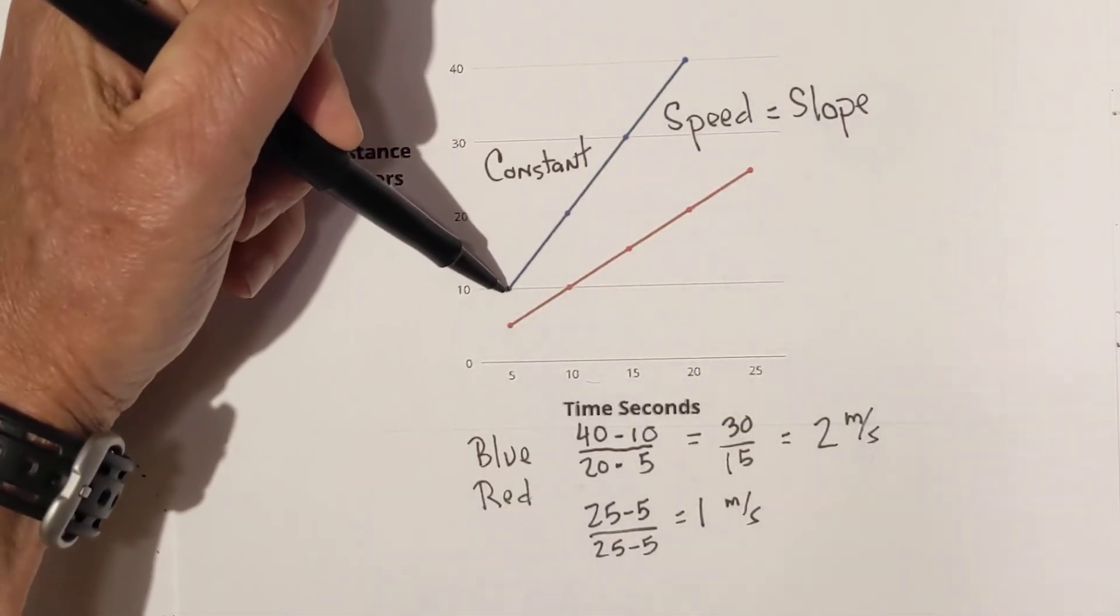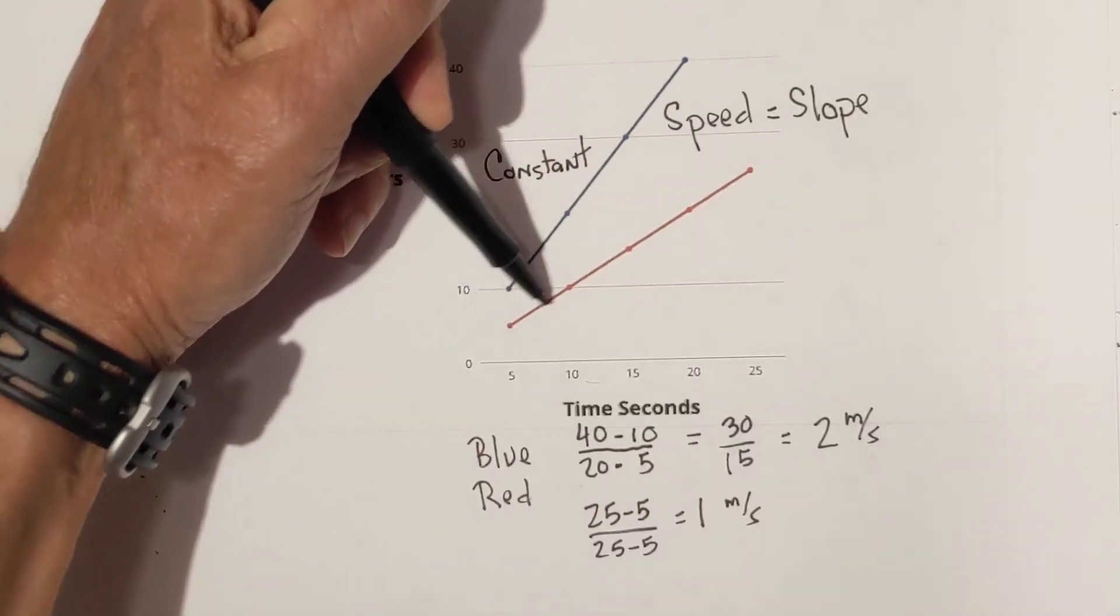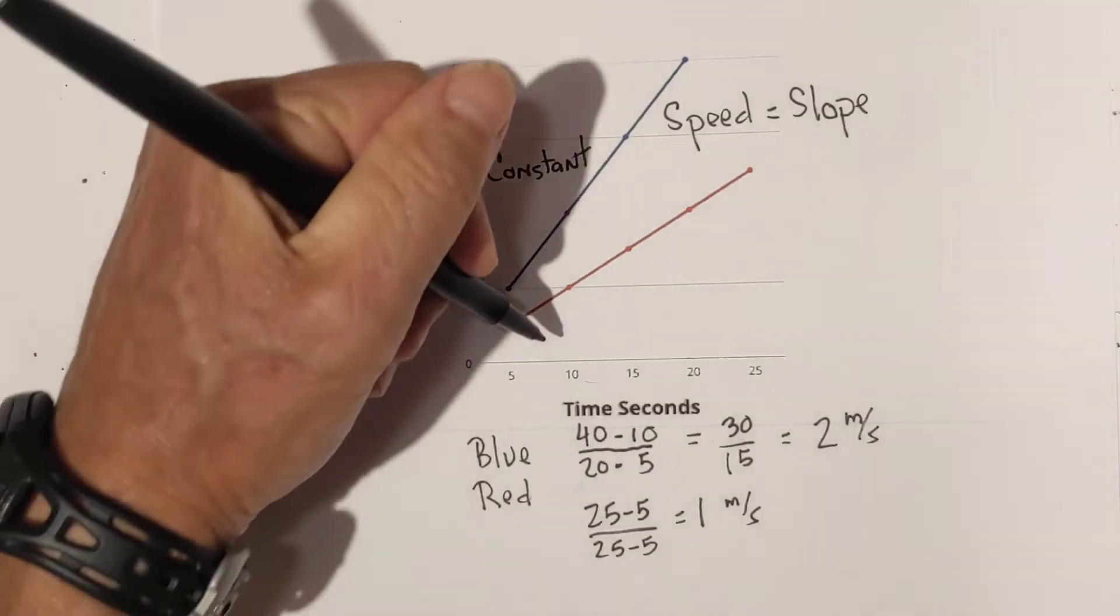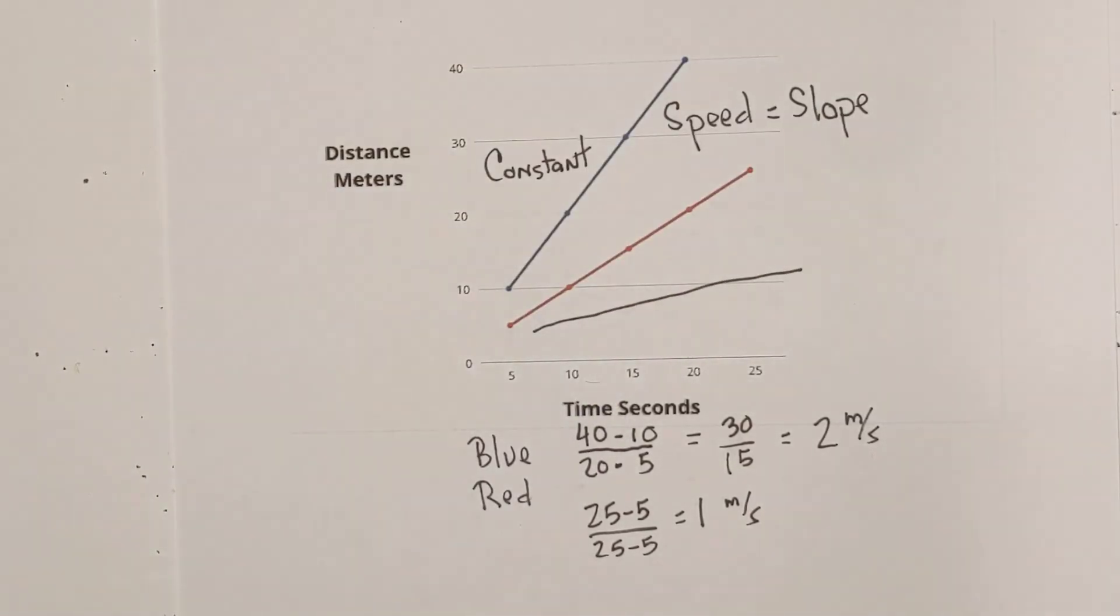the blue line is 2 meters per second and the red line is 1 meter per second. So, this is going at a quicker constant rate than this red line. And then this would be even slower if it was at this angle.